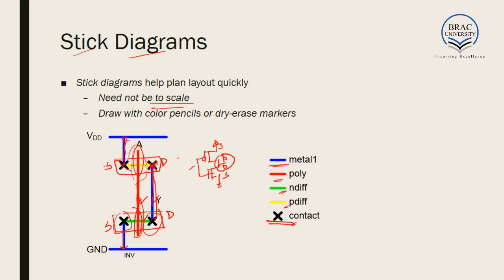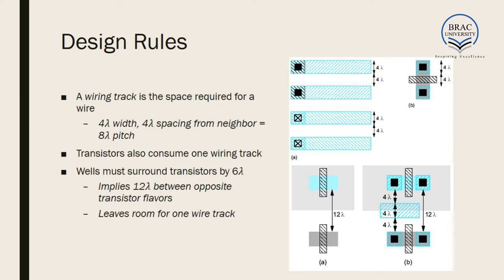When drawing stick diagrams for assignments, use color pencils or markers so different layers are distinguishable — for example, P-diffusion layer is indicated by yellow. The stick diagram is essentially a shorter, easier format of the layout. The layout, however, must accurately represent how the actual circuit will look — how metals, polysilicon, and other layers are physically arranged. Therefore, definite rules must be followed for designing the layout.